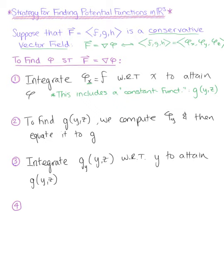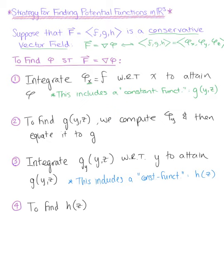Just like in step one, this includes another constant function — this time with respect to the one remaining variable z. So we have a new arbitrary constant function h(z) that we need to find. We repeat this same process: compute the partial derivative of phi with respect to z and equate it to the h component of the vector field. This process repeats itself until we have an actual arbitrary constant c added at the end.